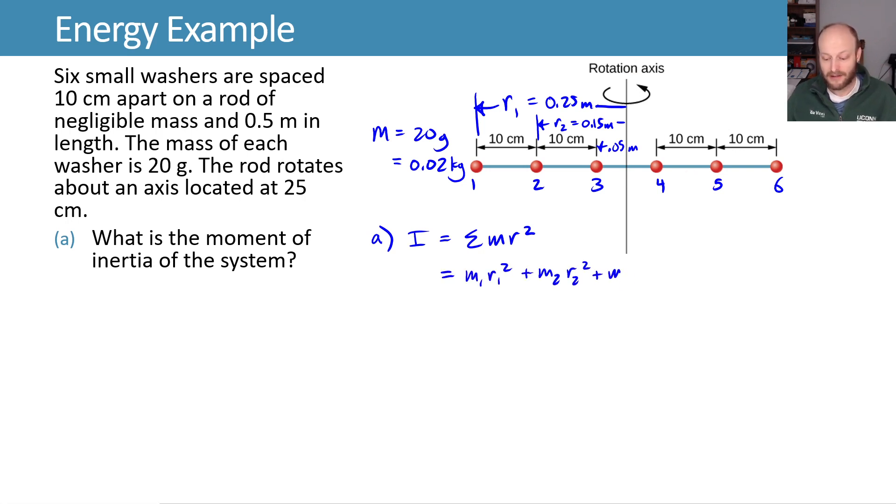We can now add these together and say this is going to be equal to m1 r1 squared plus m2 r2 squared plus m3 r3 squared plus etc.